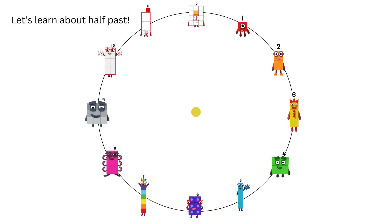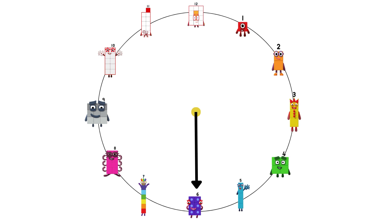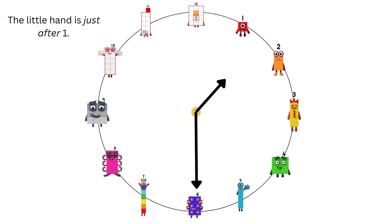This time, let's learn about half past. This time, the big hand is at six. There it is. Let's add the little hand. The little hand is just after one, so it is half past one.